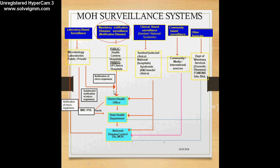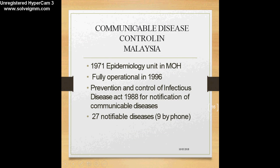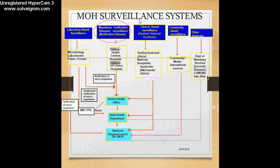Other than healthcare facilities, several other agencies are also involved as part of MOH surveillance systems — including laboratories, clinic-based and community-based systems, and the Department of Veterinary Services for zoonotic diseases. This is a network — a big surveillance system — and the work in these surveillance systems goes on continuously and never stops.